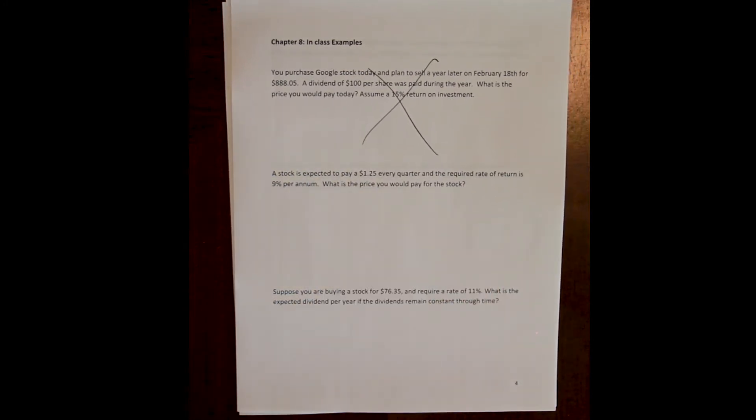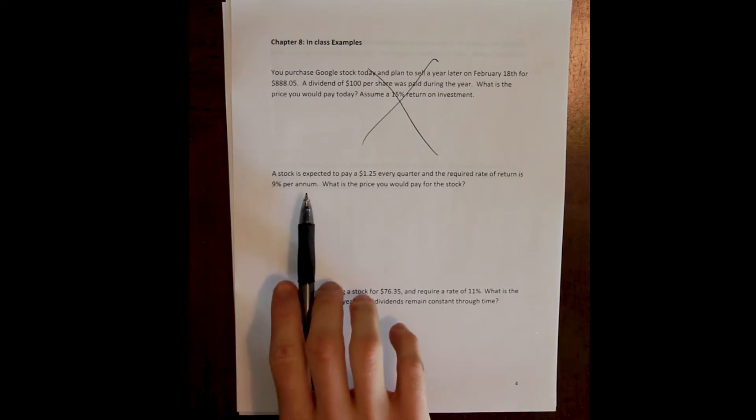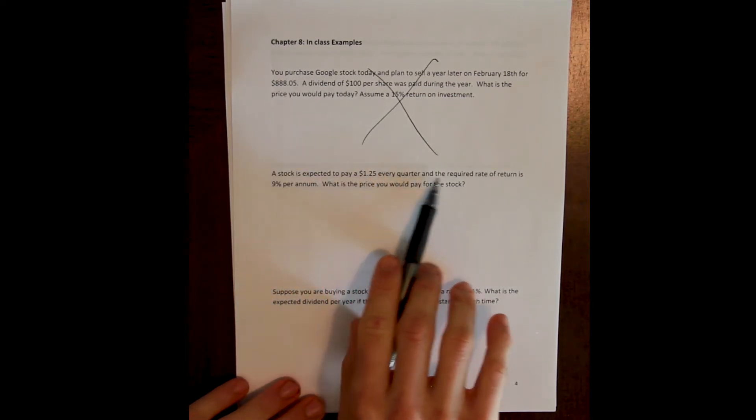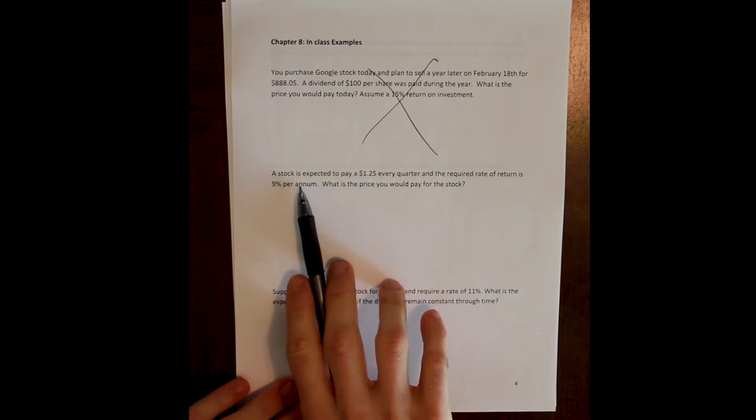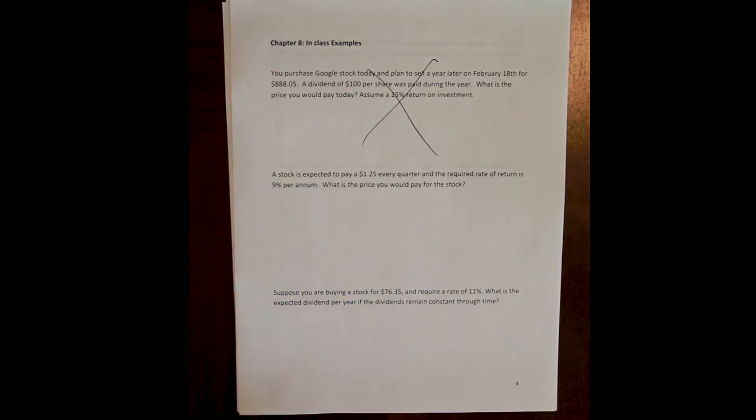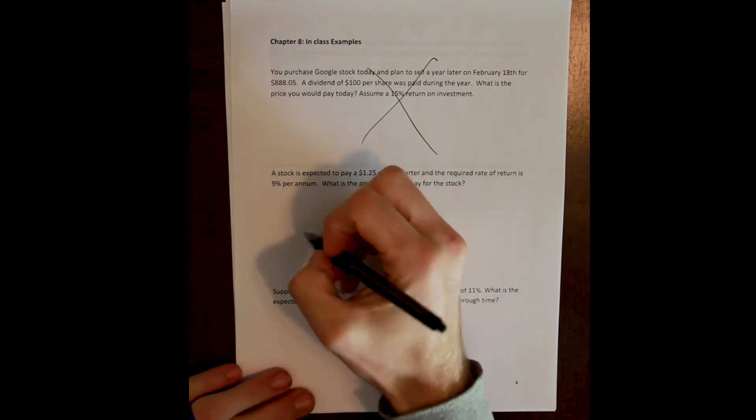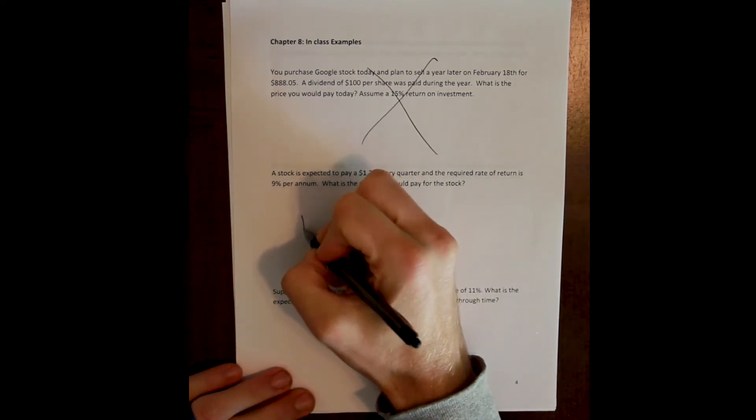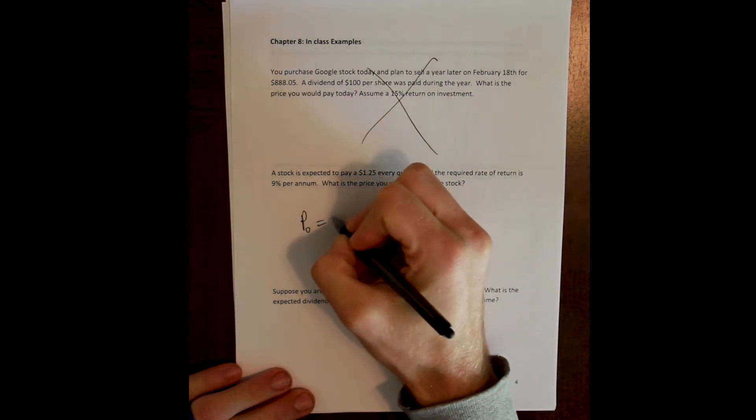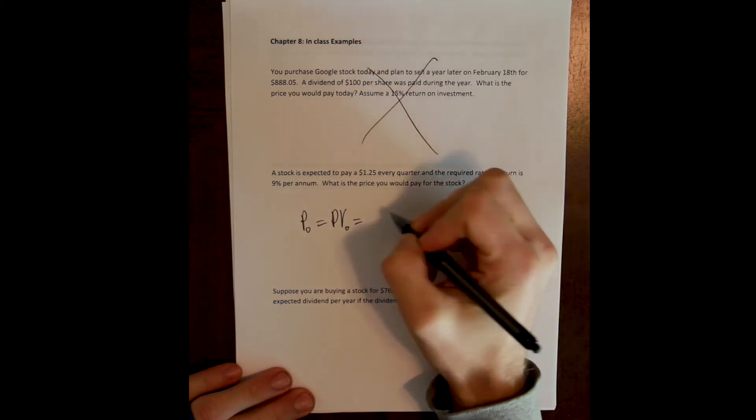What we have to do in any of these stock questions is first identify the regime and then second we just apply the appropriate model. A stock is gonna pay $1.25 every quarter. We don't see anything about a growth rate, we don't see anything about a second type of dividend regime where the dividend switches to be something else. So we recognize this as the constant dividend regime and we know that we value this stock using the standard perpetuity model.